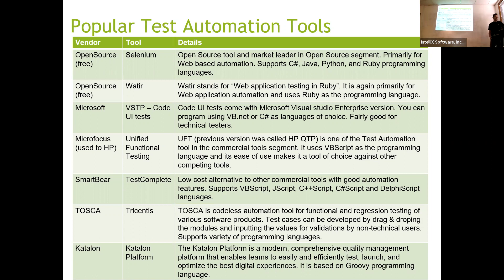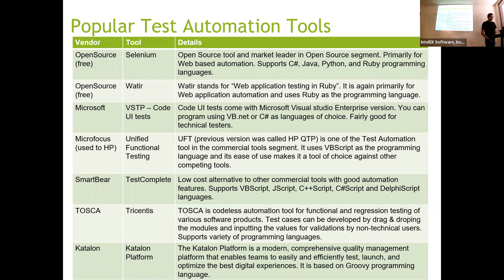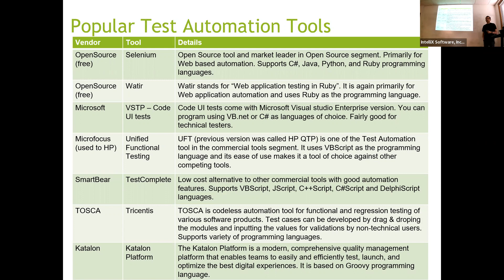If you want to master automation, you have to learn programming, because essentially all tools will require some programming knowledge. Selenium and Watir are both open source free tools, and they require learning at least one programming language — either Ruby, Java, or C Sharp.